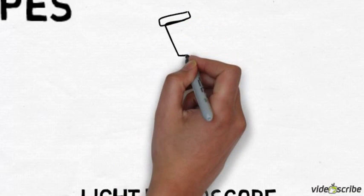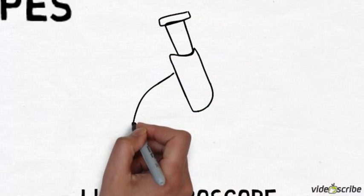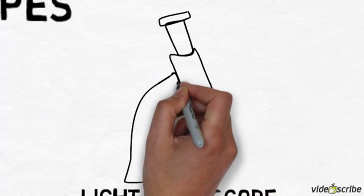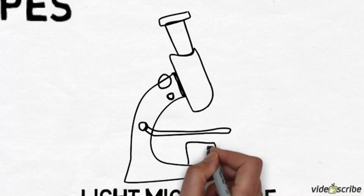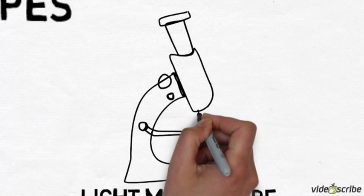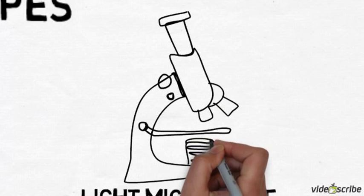Over time the light microscopes which they used were further developed to the type of microscope you use in lessons at the moment. They have a reasonable resolution, they can magnify things about 400 times or up to a thousand with professional ones, and you can see single cells and you can see things like nuclei.